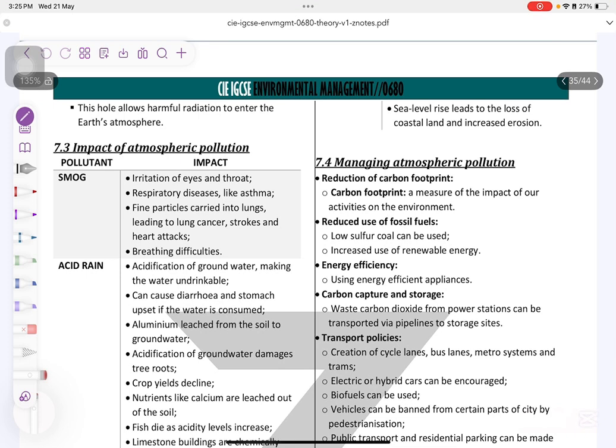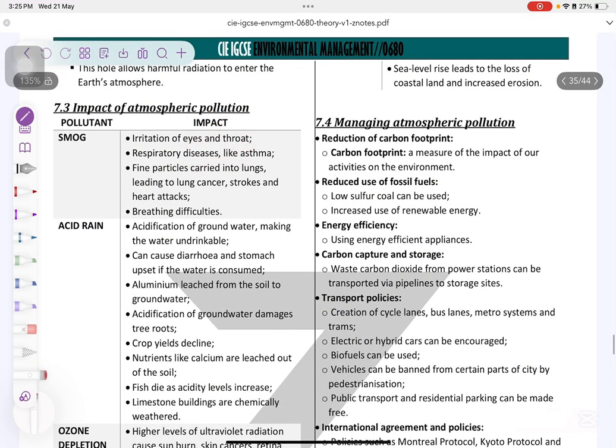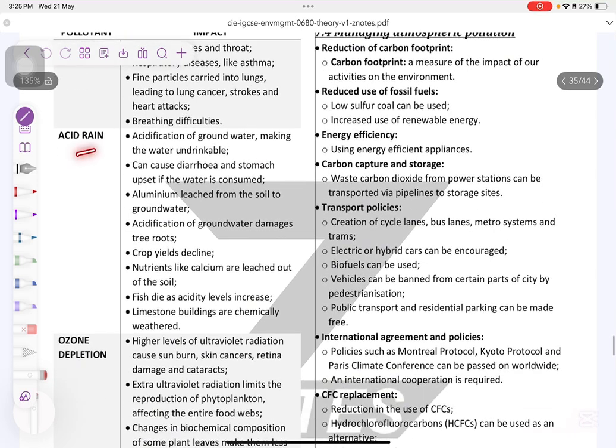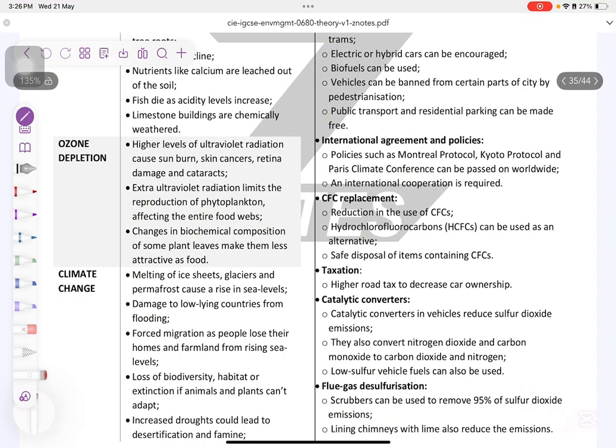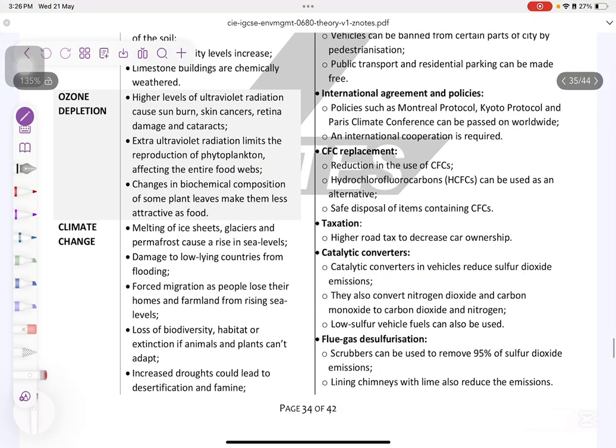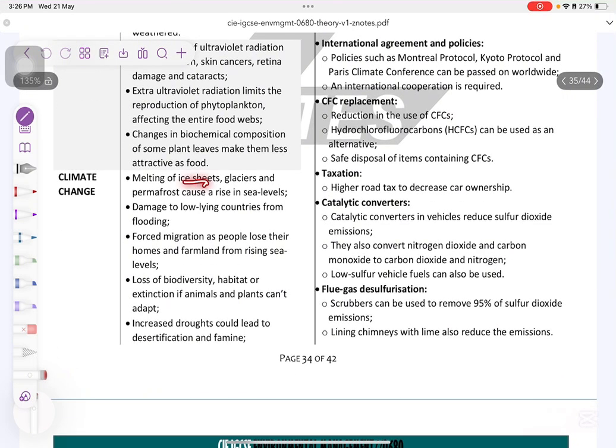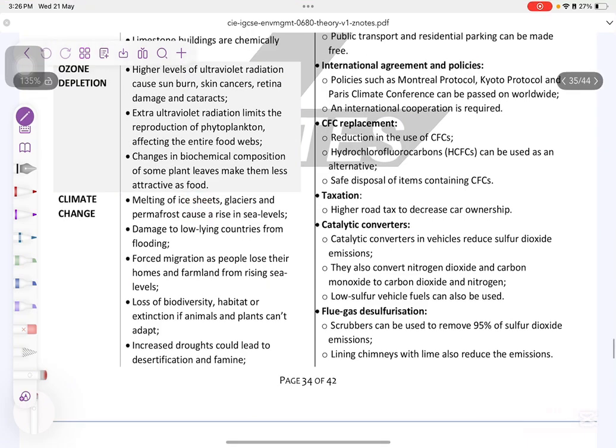So what pollutants do we have? The impact of atmospheric pollution like smog causes the irritation of the eye and throat and respiratory diseases. Acid rain, you know acidification of groundwater and soil. This causes also diarrhea and stomach obsession. Acidification of groundwater damages the root. The crop yields decline because of the acidification of soil, which affects the nutrient retention and the uptake of nutrients by the plant. Ozone depletion is the higher levels of ultraviolet radiations. They cause burns, skin cancers and cataracts. Climate change is like melting of ice glaciers and ice sheets and that will cause increase in sea levels and cause floodings.